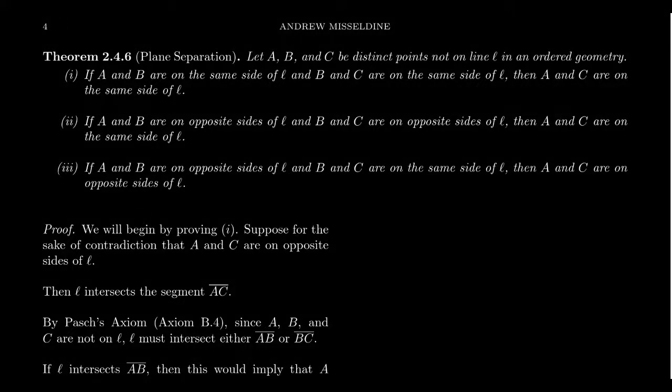In this video, we're going to continue developing the theory and notions of ordered geometry, which we defined in the previous video for lecture 10 in our lecture series. In the previous video, we provided the four axioms of betweenness: collinearity and symmetrization, axiom extension, trichotomy, and Pasch's axiom.